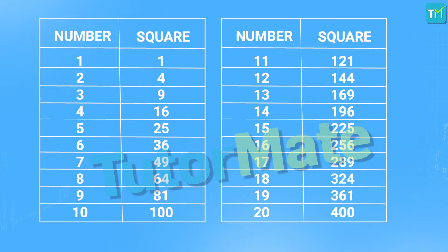Last but not the least, for the numbers ending in 0, the square of such numbers will have twice the number of zeros that are present in the number itself. For example, 10 square is equal to 100. Here, 10 has a single 0, while its square 100 has twice the number of zeros as 10 — that is 2 into 1, which is 2 zeros. At the same time, 200 square is equal to 40,000, where 200 has 2 zeros and 40,000 has 2 into 2, which is 4 zeros.